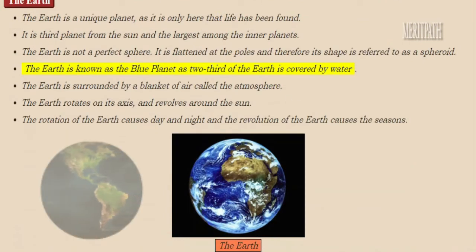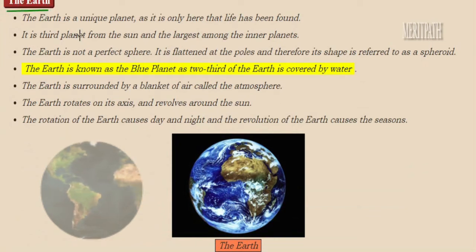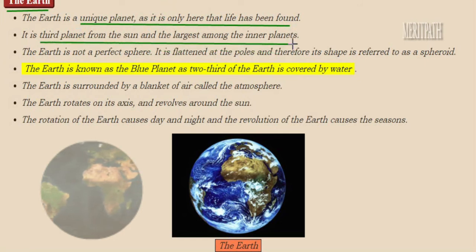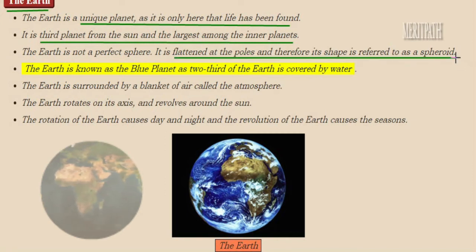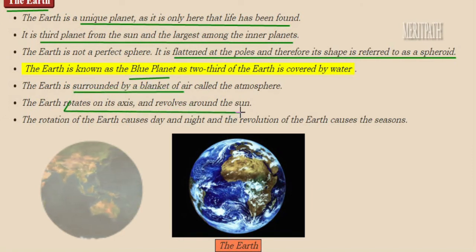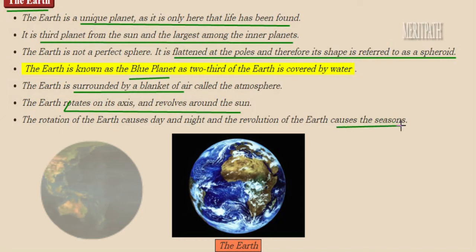Planet Earth is a unique planet because life is only found here. It is the third planet from the sun and the largest among the 4 inner planets. The shape of the Earth is known as spheroid because, in spite of being round in shape, it is flattened at the poles — north pole and south pole. Earth is also known as the blue planet because 71% of the Earth's surface is covered by water, which looks blue. Earth also has a blanket of air surrounding it known as the atmosphere. Earth rotates on its own axis and also revolves around the sun, and this rotation and revolution causes differences on the Earth.